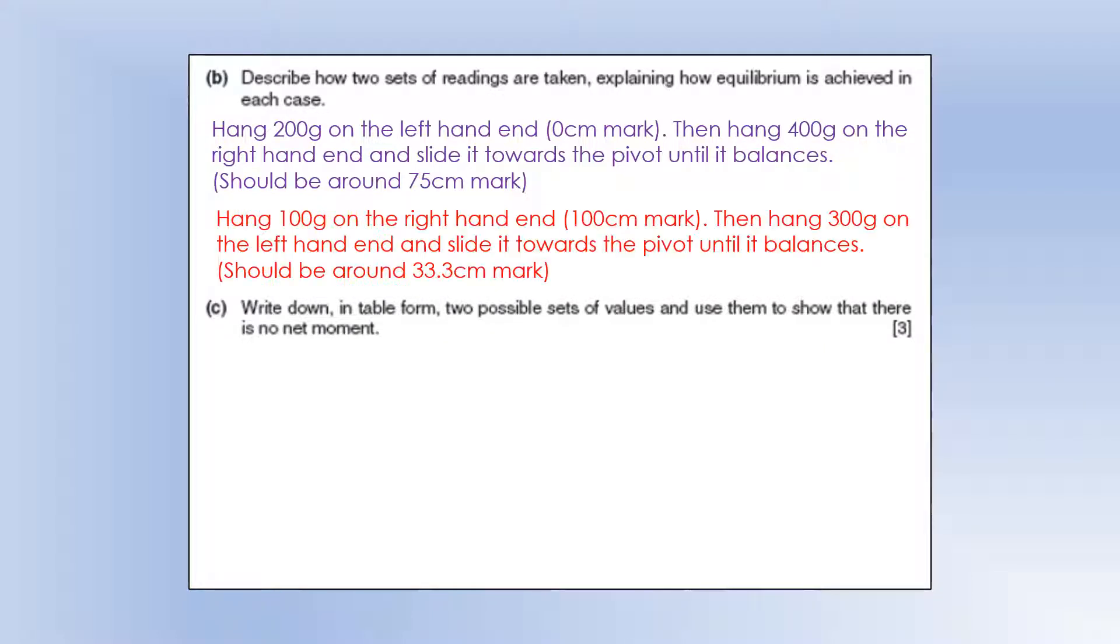We could do another set. So let's do it another way around. Let's put 100 grams on the right-hand end, and then hang 300 grams on the left-hand end and slide it towards the pivot, which should be about 33.3 centimeters, or 16.6 from the pivot. So that would give you two sets of data.